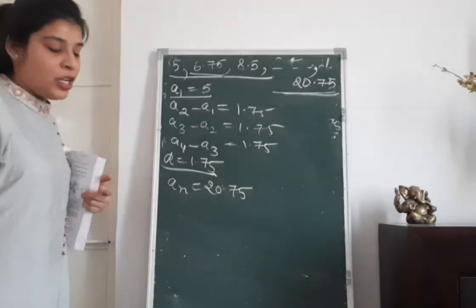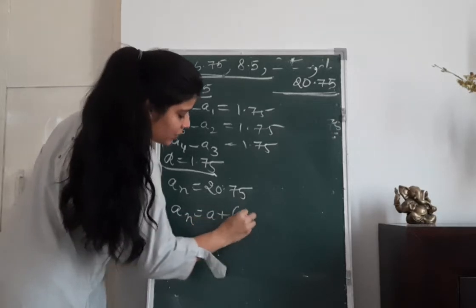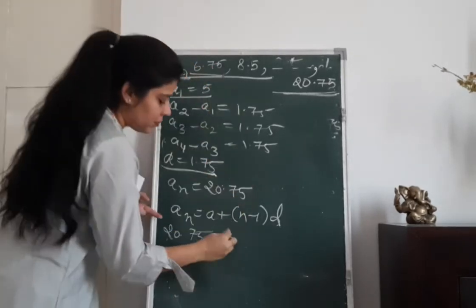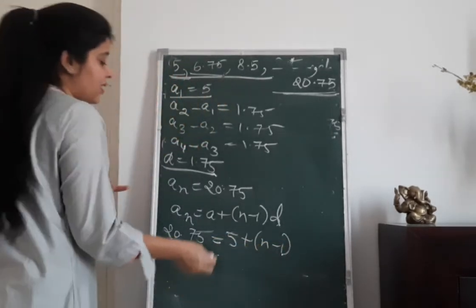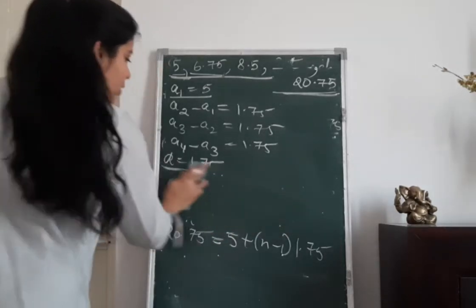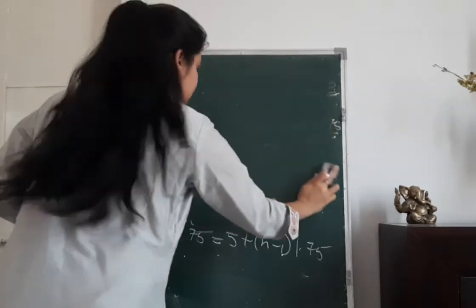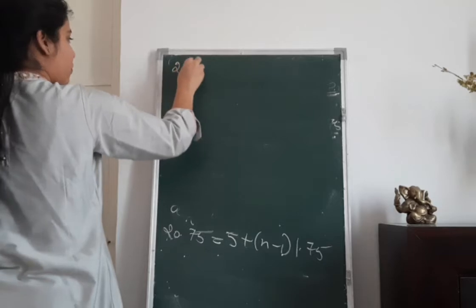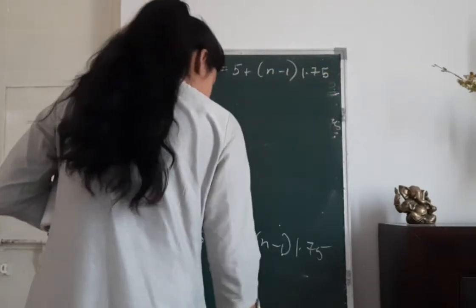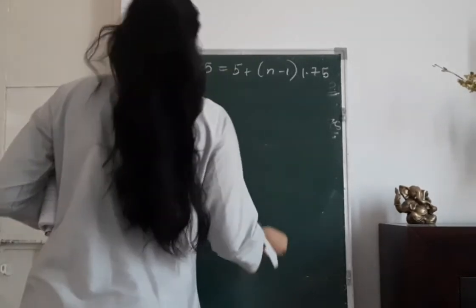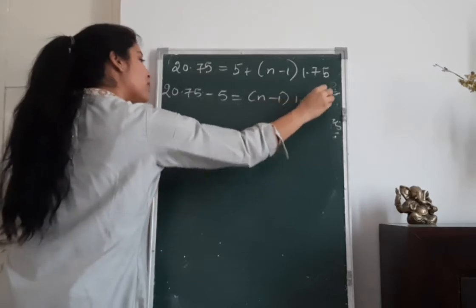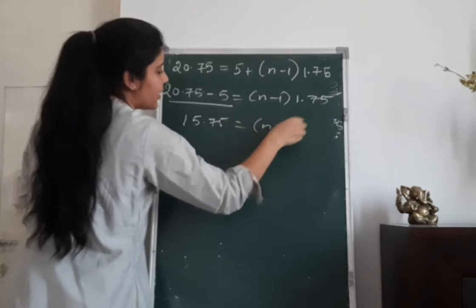Using the same formula: An = A + (n−1) × D, where An is 20.75, A is 5, and D is 1.75. So: 20.75 = 5 + (n−1) × 1.75. Rearranging: 20.75 − 5 = (n−1) × 1.75, which gives 15.75 = (n−1) × 1.75.